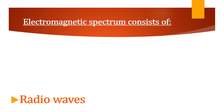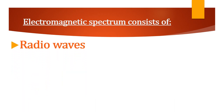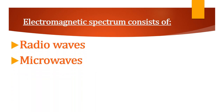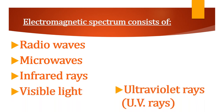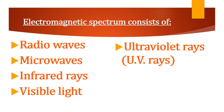The electromagnetic spectrum includes the following waves. Number one, radio waves. Number two, microwaves. Number three, infrared rays. Number four, visible light. Number five, ultraviolet rays, which are also known as UV rays. Number six, X-rays. And number seven, gamma rays.